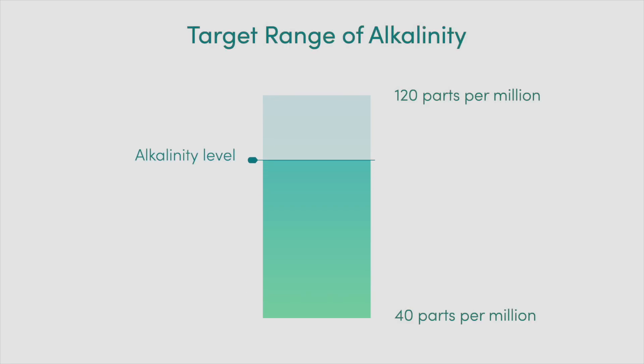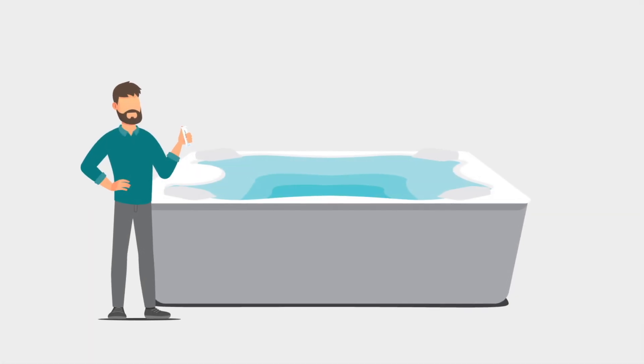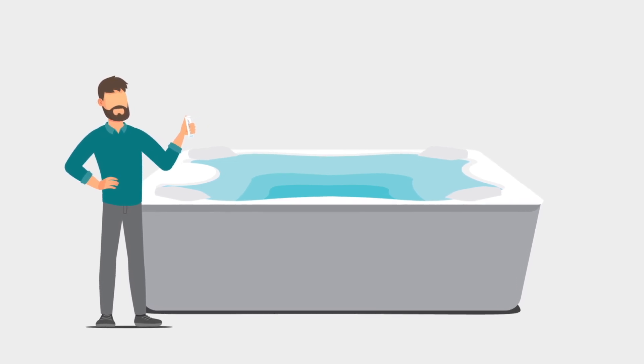Repeat the balancing steps as necessary until the alkalinity level is between 40 and 120 parts per million. Follow the directions provided in the other videos in this series to continue balancing your spa water.